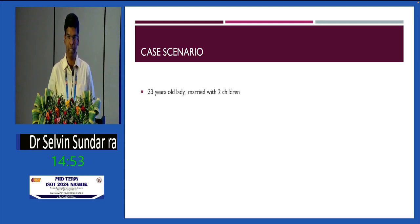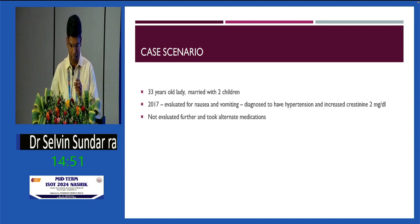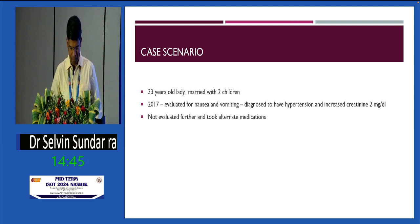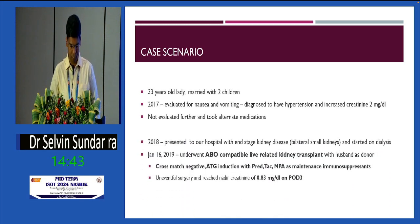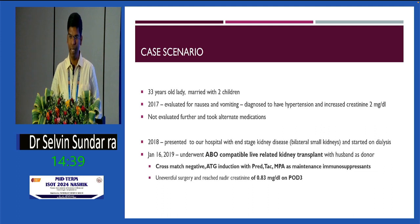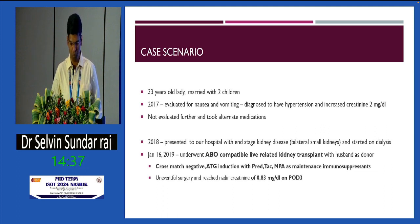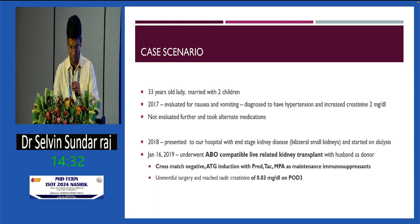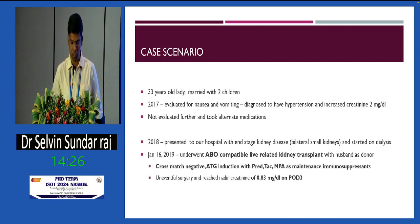It's a 33-year-old lady, married with two children. In 2017, she was evaluated for nausea and vomiting and found to have kidney disease with hypertension, but not evaluated further. In 2018, she presented to our hospital with end-stage kidney disease, bilateral small kidneys, and was started on dialysis. In 2019, she underwent a kidney transplant with her husband as the donor. Cross match was negative. ATG induction with PRED, tacrolimus, and MPA as maintenance immunosuppressants.